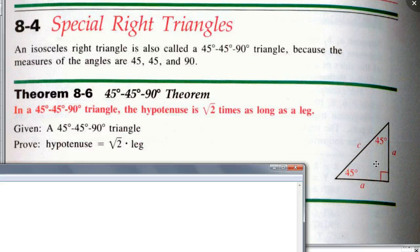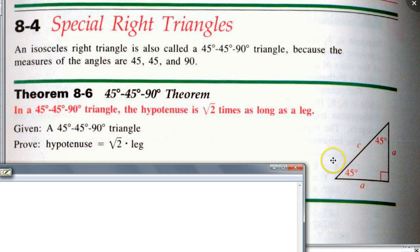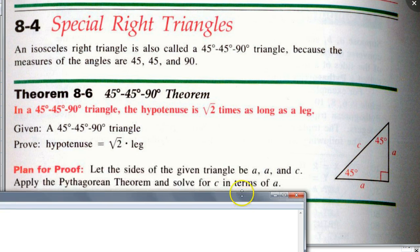So how would you go about proving this? How about William? How would you know this relationship? If you have a 45-45-90 degree triangle, why is the hypotenuse always going to be square root of two times the length of one of the legs — of course they're both the same. Any idea? I used the Pythagorean theorem. Okay, so here we go.